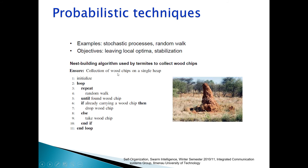The goal is collection of wood chips on a single heap. First, initialize. Then the algorithm goes in a loop: random walk until a wood chip is found. If already carrying a wood chip, drop the wood chip; else, take the wood chip. End if. Then loop again. This is how termites build their nest using random walk.